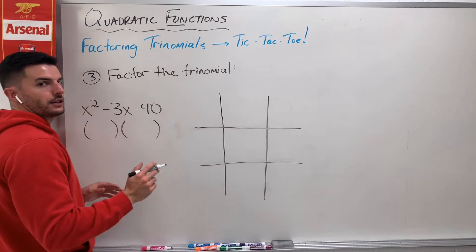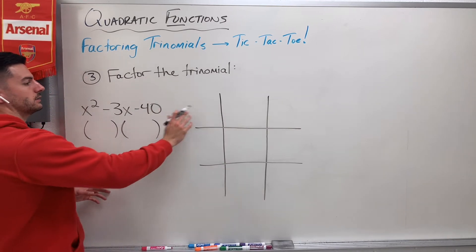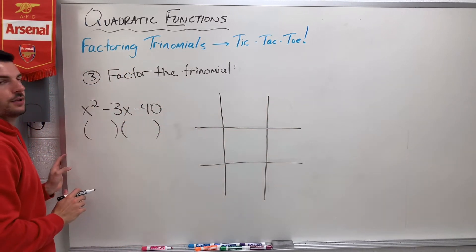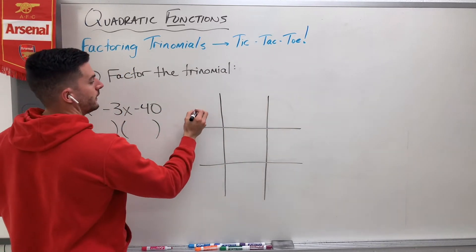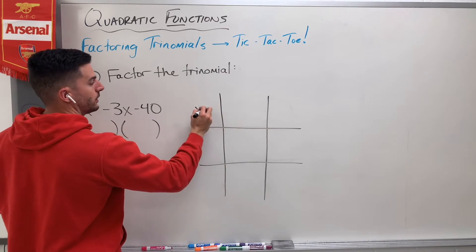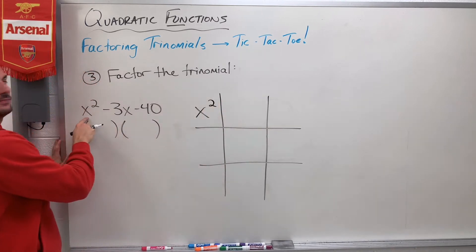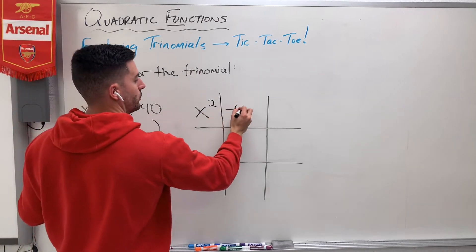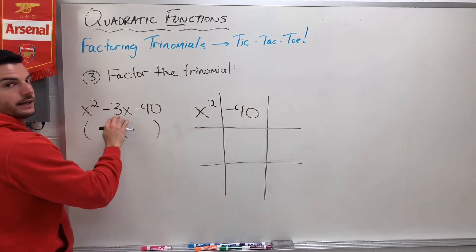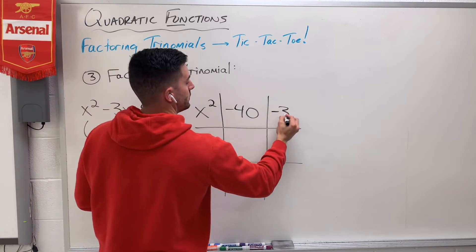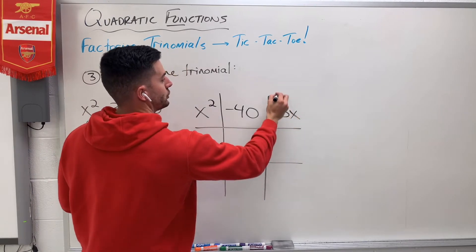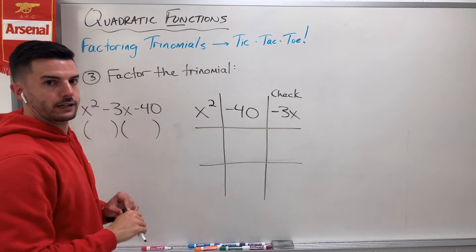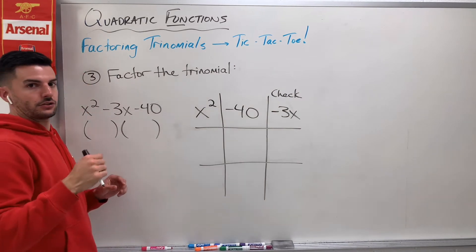The first thing I do is write across the top row my terms in my trinomial. I don't write them exactly in order. I go x squared in this first one, my first term. Then my second square is actually going to contain my last term, this negative 40, and then that negative 3x is my check column — that's my big important one that I'm going to use to check at the end to make sure I got the right numbers.